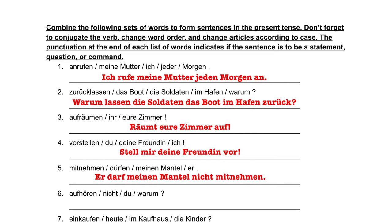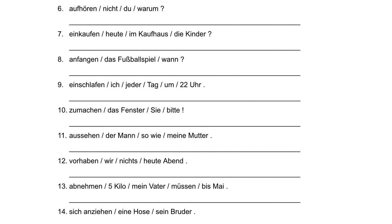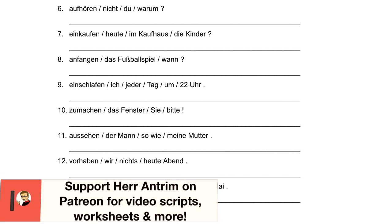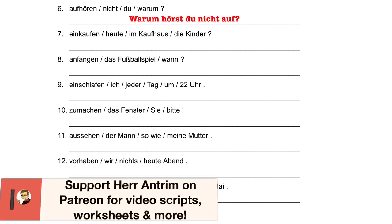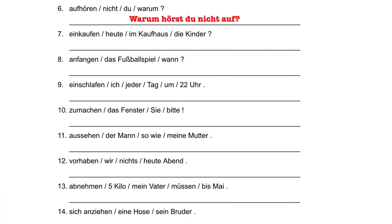In number six, we have again a question, so we start with our question word. We conjugate the main verb hören and put auf at the end of the sentence. This being the du form, we have: Warum hörst du nicht auf? — Why don't you stop?